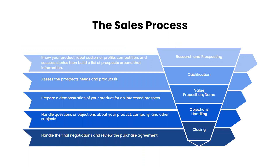The sales process has five stages. The first is research and prospecting — having tools to know your product, ideal customer profile, competition, and success stories, then building a list of prospects. This involves easily accessible documentation and an easy way to build prospects in the CRM, whether through importing or creating leads on social media. The second stage is qualification — assessing the prospect's needs and product fit — which can come from marketing content they interact with or initial conversations.